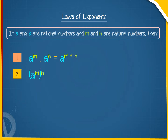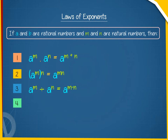Law 2: A raised to the power M, whole power N, equals A raised to the power MN. Law 3: A raised to the power M divided by A raised to the power N equals A raised to the power M minus N.